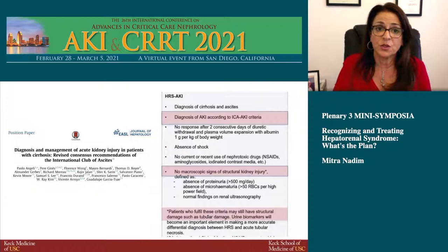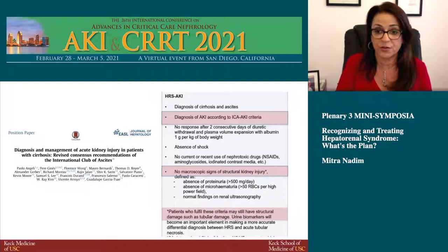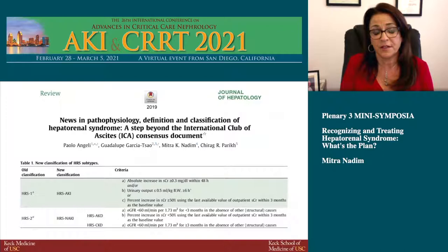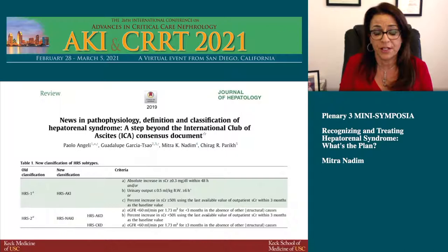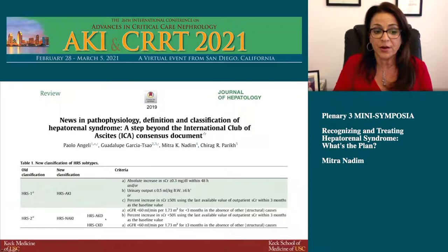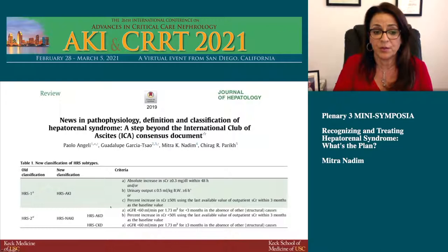This goes back to the ATKE notion that patients can have underlying chronic kidney disease and develop hepatorenal syndrome on top of that. A proposal by myself, Dr. Anjali, Dr. Garcia, and colleagues is to remove the HRS 1 and 2 classification. HRS 1 would be called HRS-AKI using KDIGO criteria including both serum creatinine and urine output. HRS 2 would be subdivided into AKD and CKD depending on whether kidney injury duration is less than three months, with HRS 2 terminology eliminated.